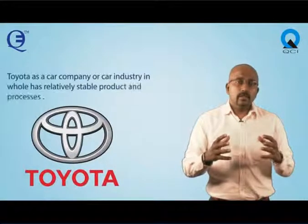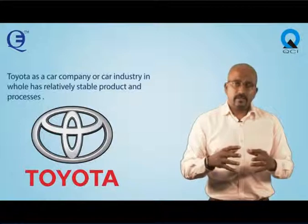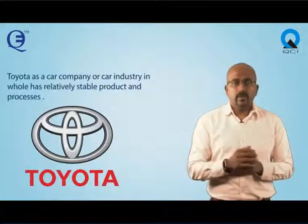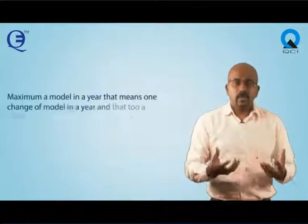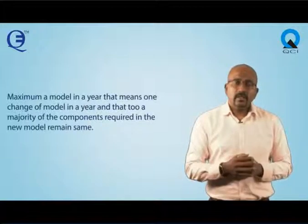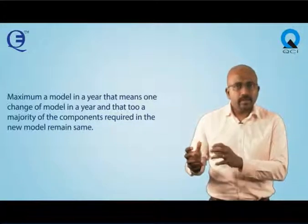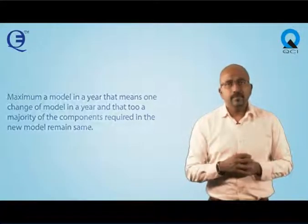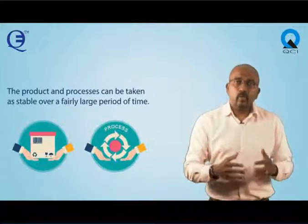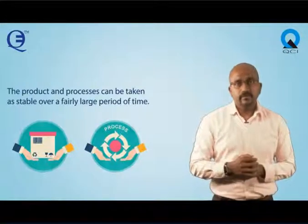Toyota, as a car company, operates in an industry with relatively stable products and processes. That means one model change per year, and a majority of the components required in the new model remain the same. So the product and processes can be taken as stable over a fairly large period of time. This is one aspect of the stability assumption that the Toyota Production System makes.